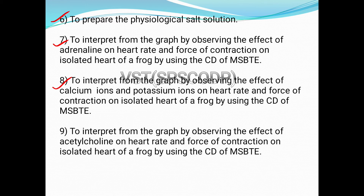The eighth experiment is to interpret from the graph by observing the effect of calcium ions and potassium ions on heart rate and force of contraction on the isolated heart of a frog using the CD of MSBT. You have to see the video, study the mechanism of action and function of calcium and potassium ions in the body, and study their effect on the frog heart.